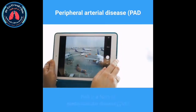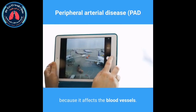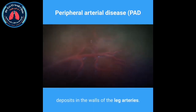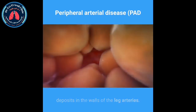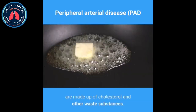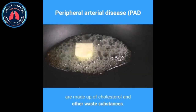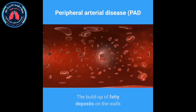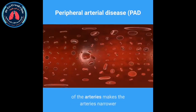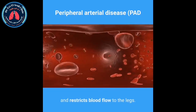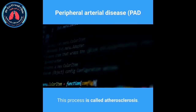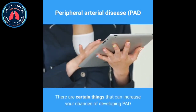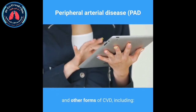Causes of peripheral arterial disease: PAD is a form of cardiovascular disease, or CVD, because it affects the blood vessels. It is usually caused by a buildup of fatty deposits in the walls of the leg arteries. These fatty deposits, called atheroma, are made up of cholesterol and other waste substances. The buildup makes the arteries narrower and restricts blood flow to the legs, a process called atherosclerosis.